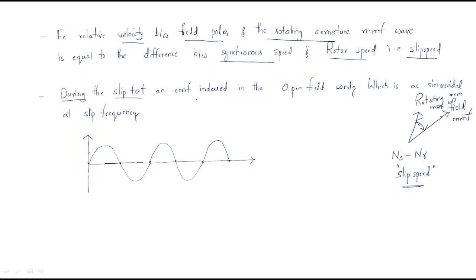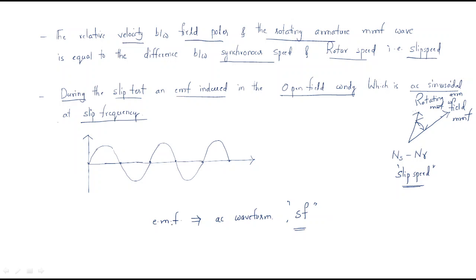During the slip test, an EMF is induced. Why is the EMF induced? Because there is a speed difference between the armature MMF and field MMF. In the open field winding, the EMF is induced, which is AC sinusoidal at slip frequency.